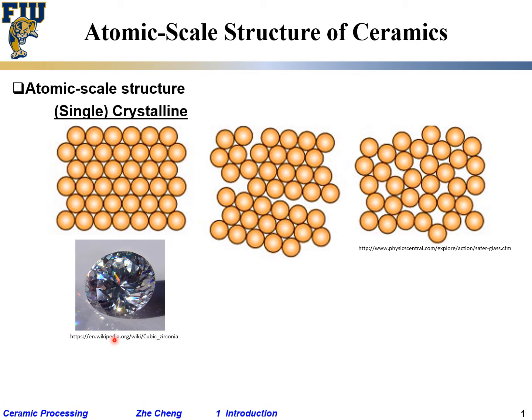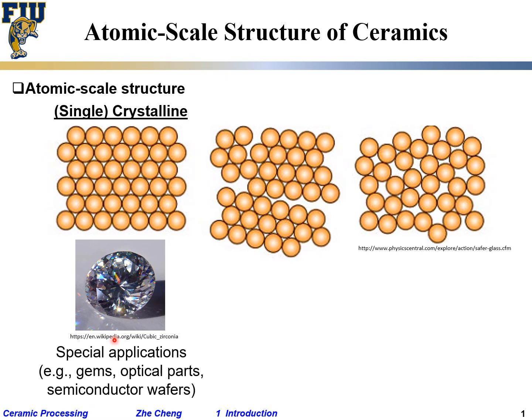Diamond — these types of single crystal ceramic materials are used only for special applications: gems, diamond, optical parts, special optical parts, semiconductor wafers such as silicon wafers, or some other special optical wafers.